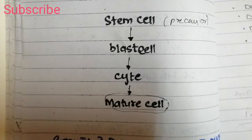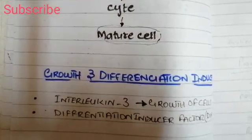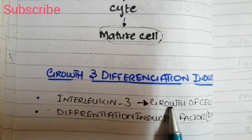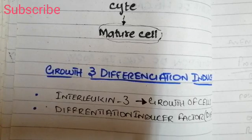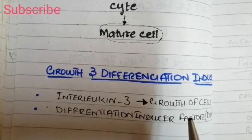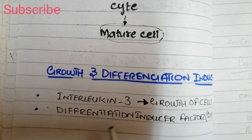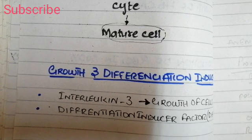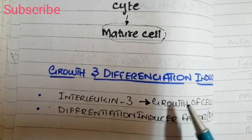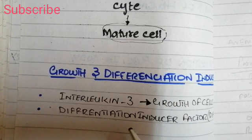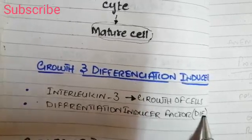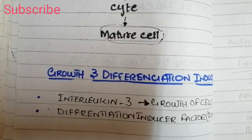This cell lineage requires growth and differentiation inducers, which are of two types. Growth inducers stimulate the growth of pluripotent hemopoietic stem cells — for example, interleukin-3, which causes the growth of pluripotent hemopoietic stem cells from the bone marrow and increases the production of mature cells in the blood. The differentiation inducers do not cause growth but only cause the differentiation of the growing blast cell into a particular cell group — into an erythrocyte, a WBC, or a platelet. These are collectively called differentiation inducer factors, or DIF.